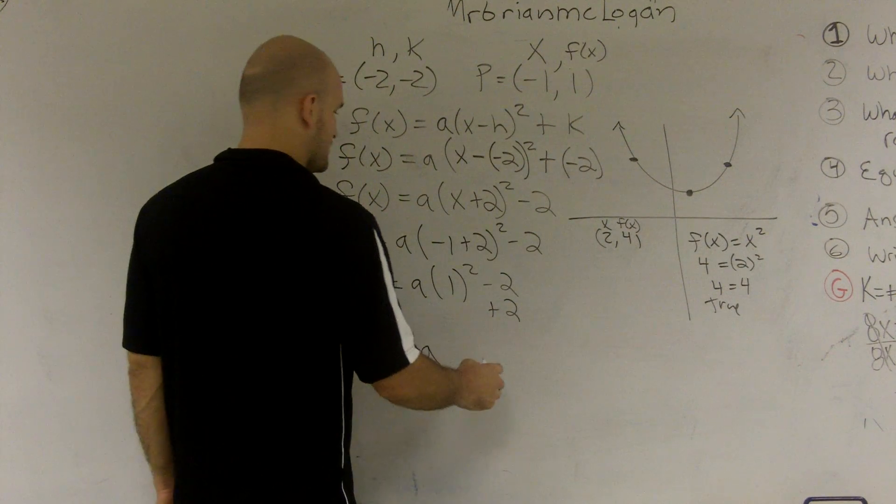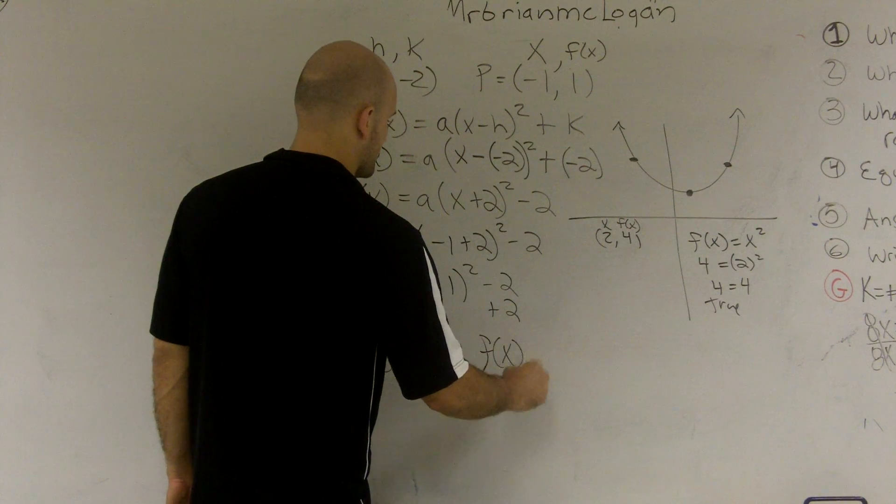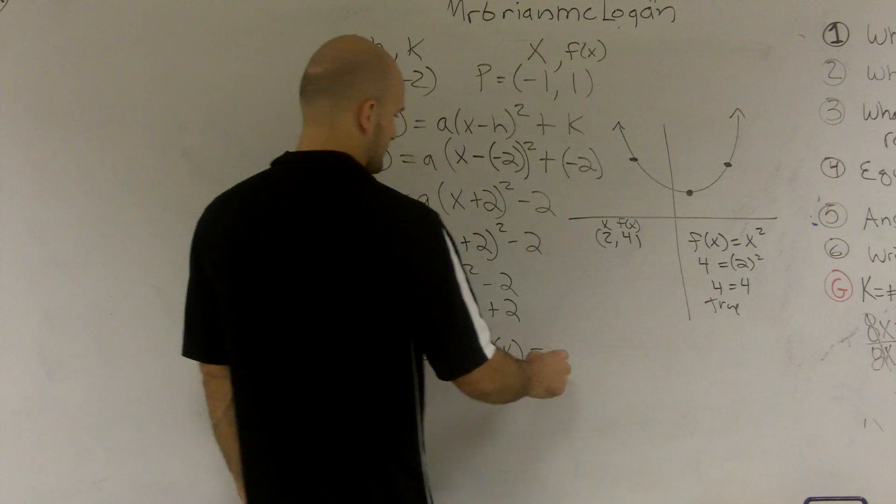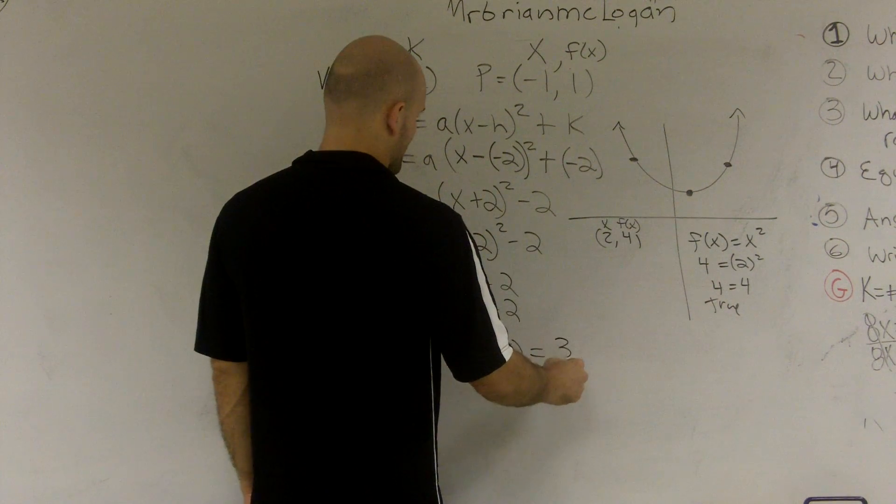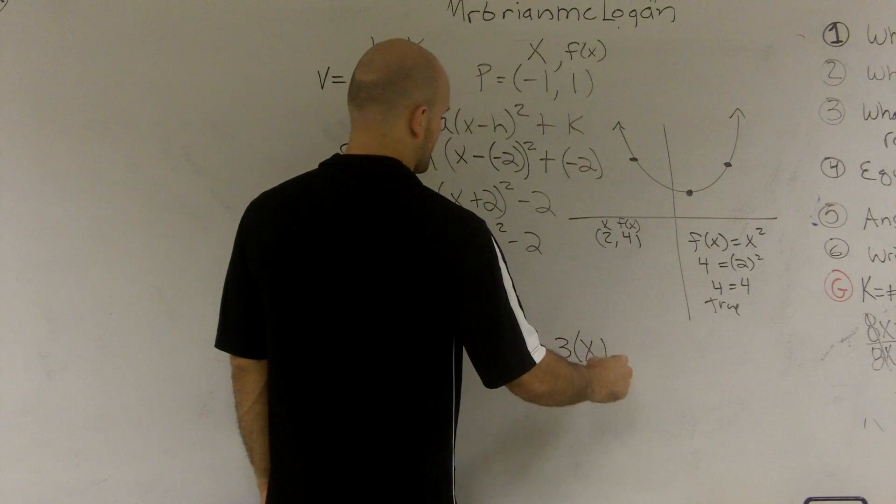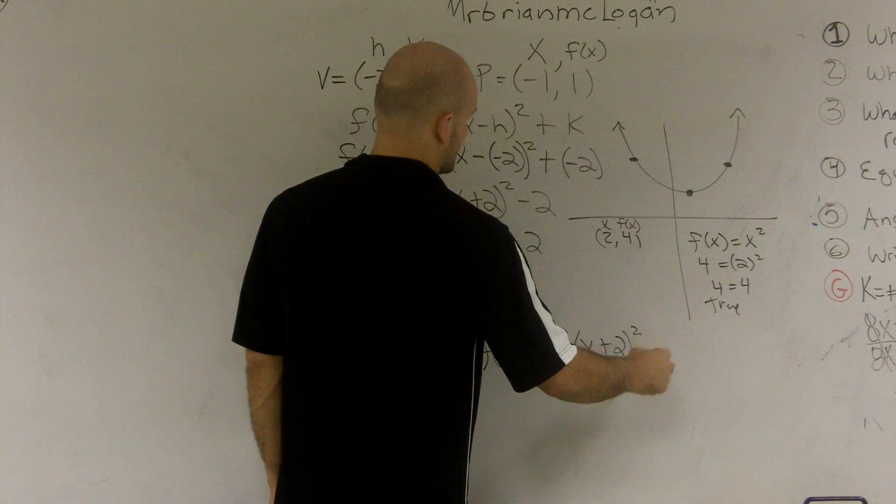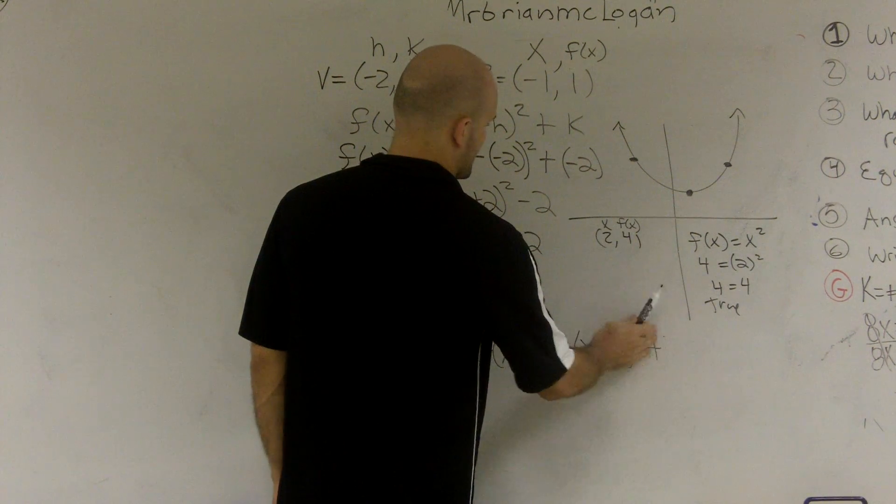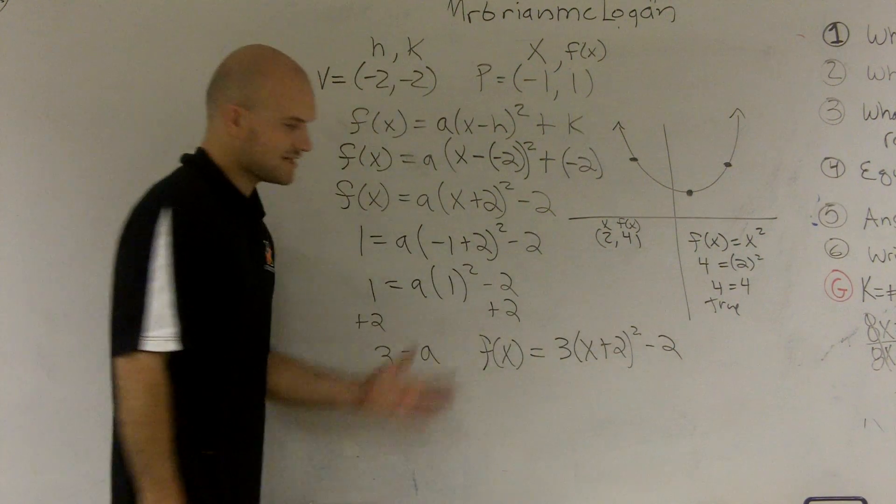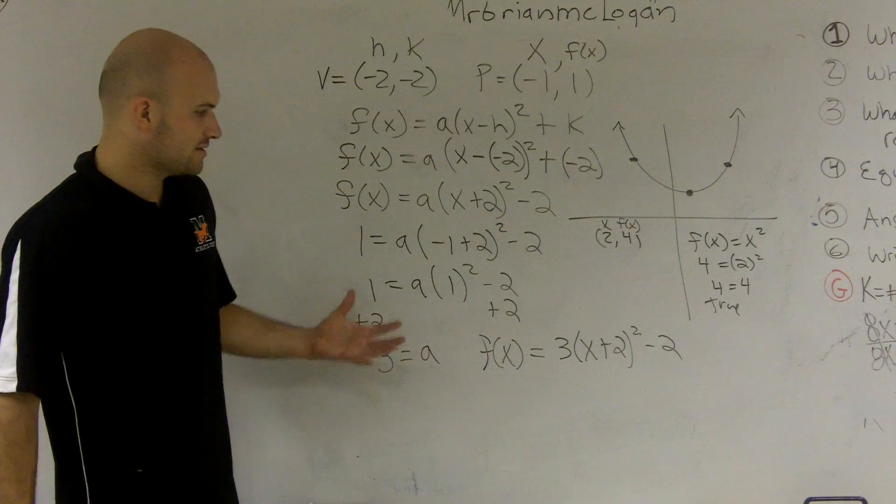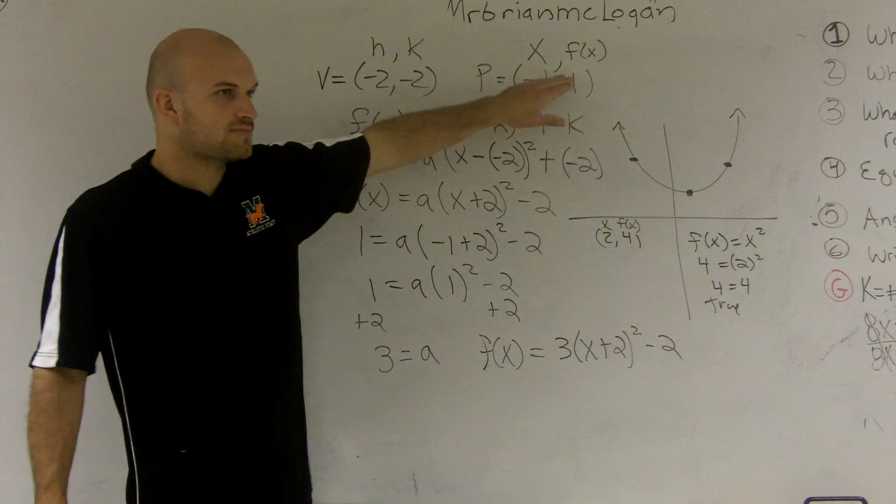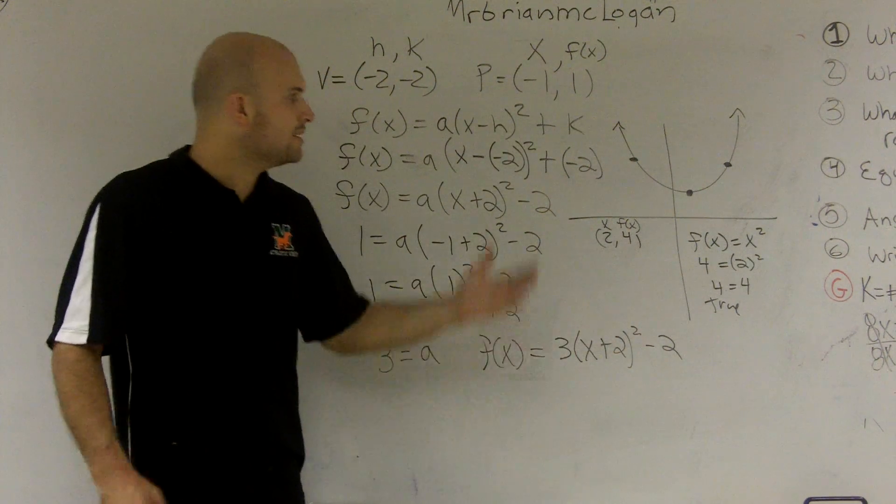So to find my equation, f of x equals 3 is my a, x plus 2 squared minus 2. So that's going to be your final function. Now some students have asked me, why don't you put in those points? Why aren't they back in your equation?